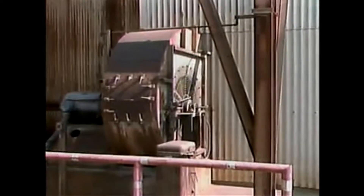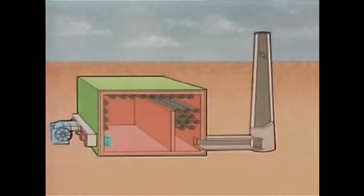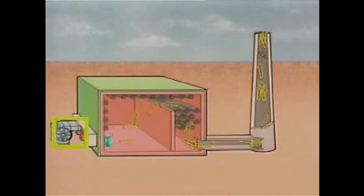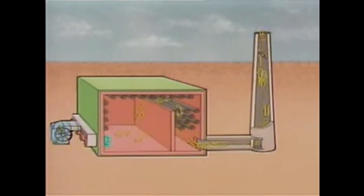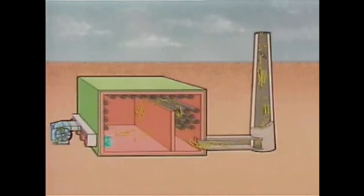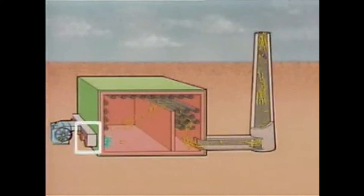Air and combustion gases are moved through force draft furnaces by fans. In a force draft furnace, a fan called a force draft fan draws air from the atmosphere and forces it into the furnace. The burners are mounted along one wall, and the combustion gases flow through the furnace and then out through the stack. Airflow is controlled by coordinating the positions and operation of the stack damper, the burner registers, and the fan.